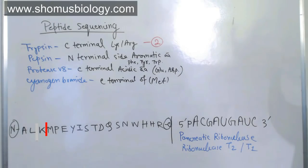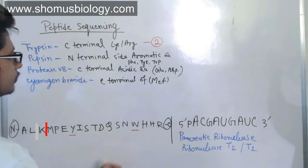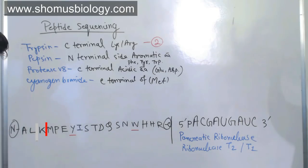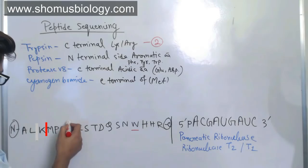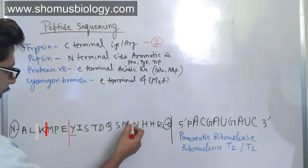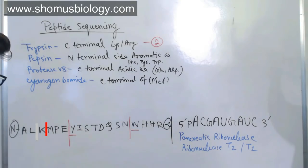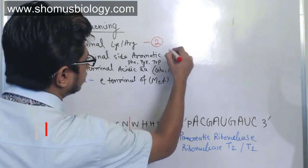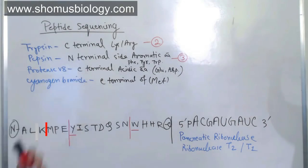For pepsin: it cleaves the N-terminal side of aromatic amino acids — phenylalanine, tyrosine, tryptophan. Looking at this polypeptide, the aromatic amino acids present are Y (tyrosine) and W (tryptophan). Pepsin cleaves at the N-terminal side of Y and at the N-terminal side of W. That gives two cuts, generating three fragments total.